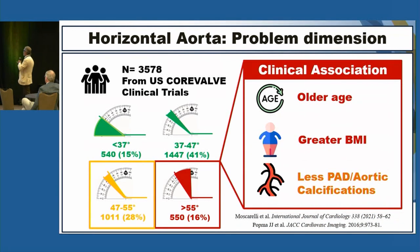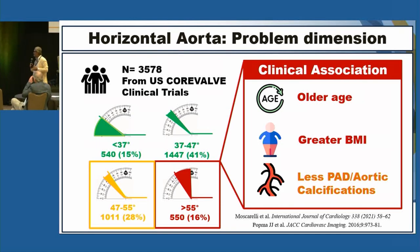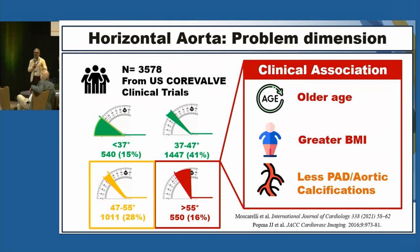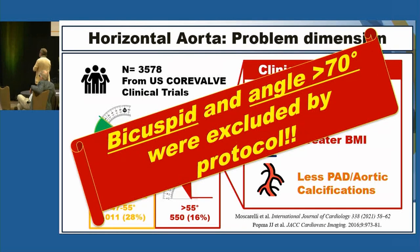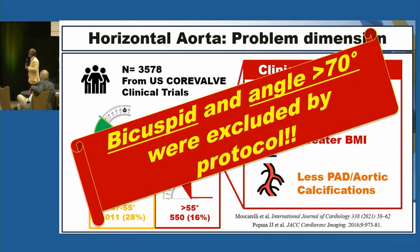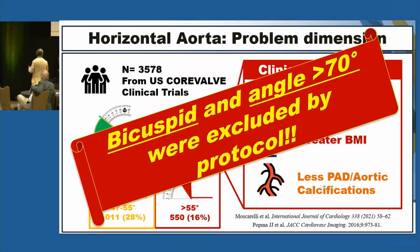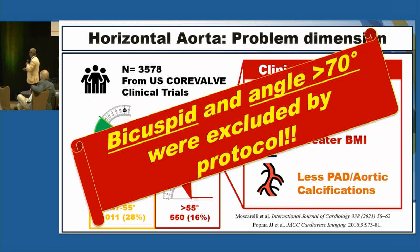44% of, for instance, the US CoreValve clinical trials show this finding of horizontal aorta. The major predictors of horizontal aorta were older age, greater BMI — and this is interesting — less PAD and poor aortic calcification. This is counterintuitive, but we will see why. Another important point: bicuspidity and an angle higher than 70 degrees was an exclusion criteria in all these trials. So when we talk about horizontal aorta, we do not discuss extreme horizontal aorta.